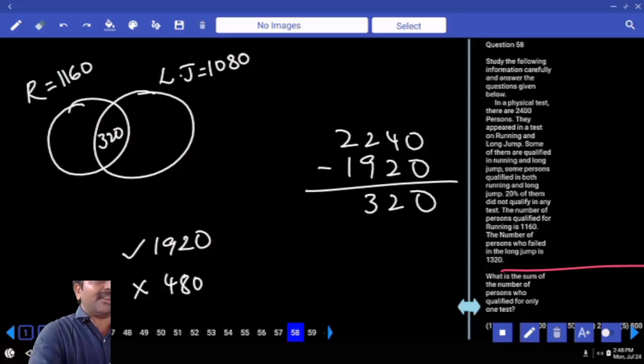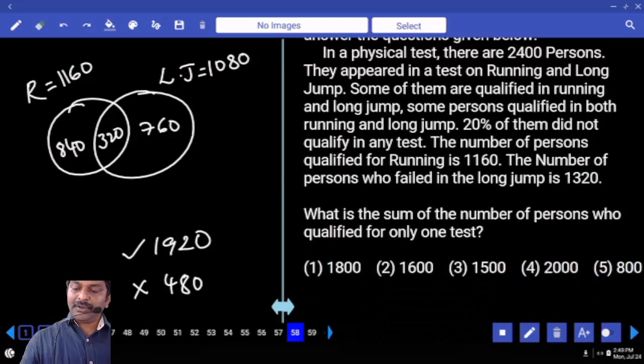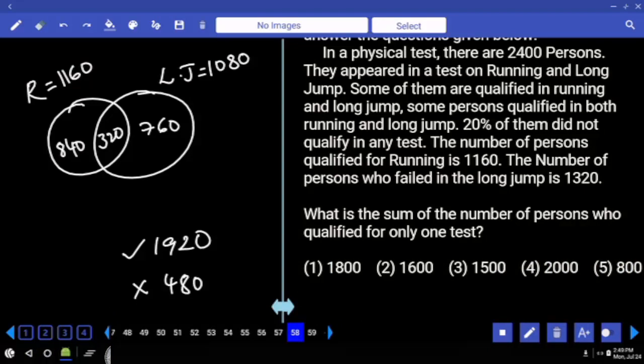Then only running: 840. In running circle, 320 is already there, remaining 840. In long jump, out of 1080, 320 is here, leaving 760. What is the sum of number of persons who qualified for only one test? Only running plus only long jump equals 1600.